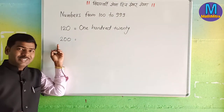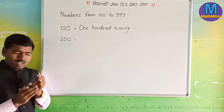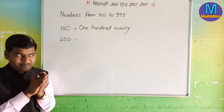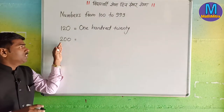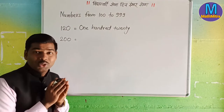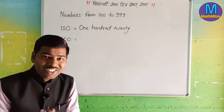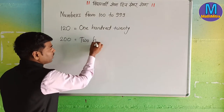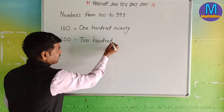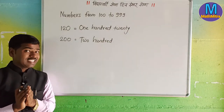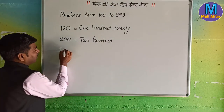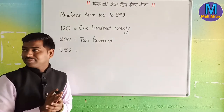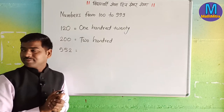2, 0, 0. Correct — 200! Very nice. Next number: 5, 5, 2, 0.